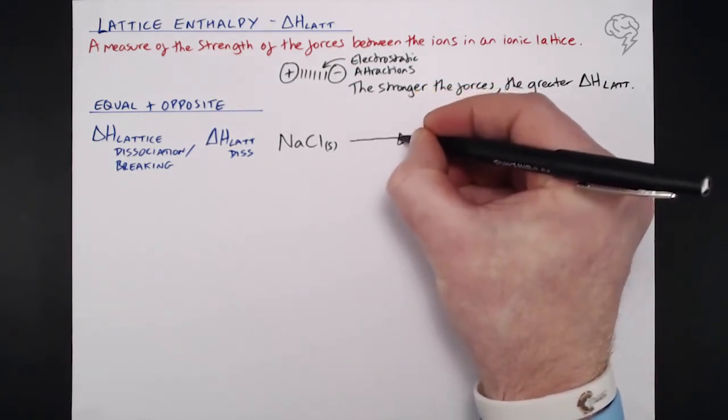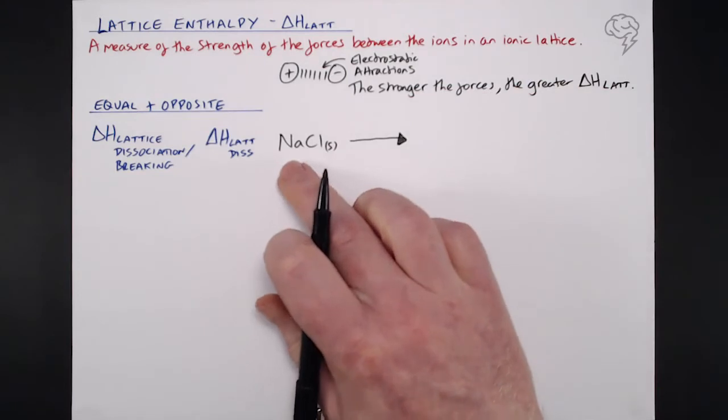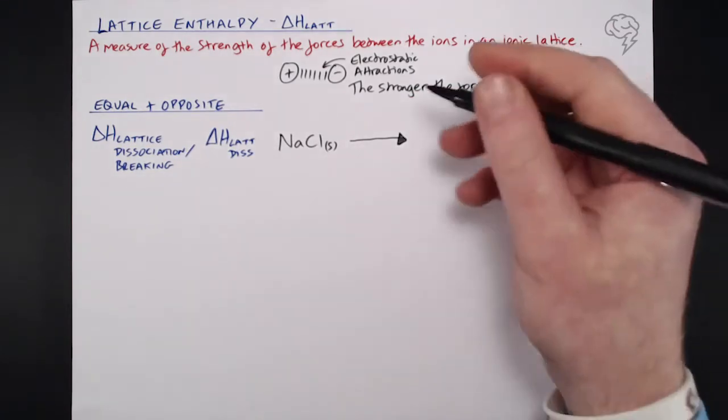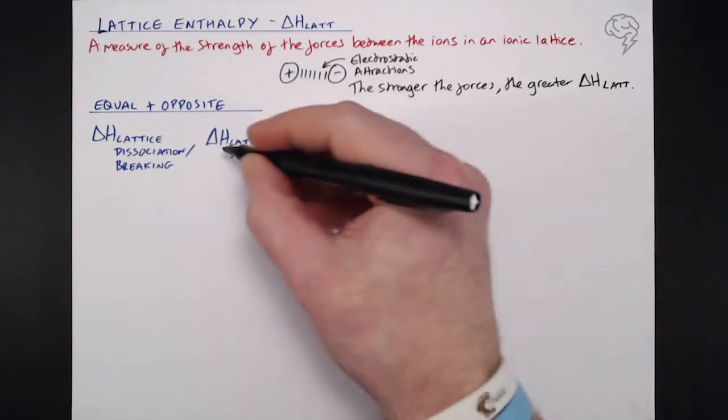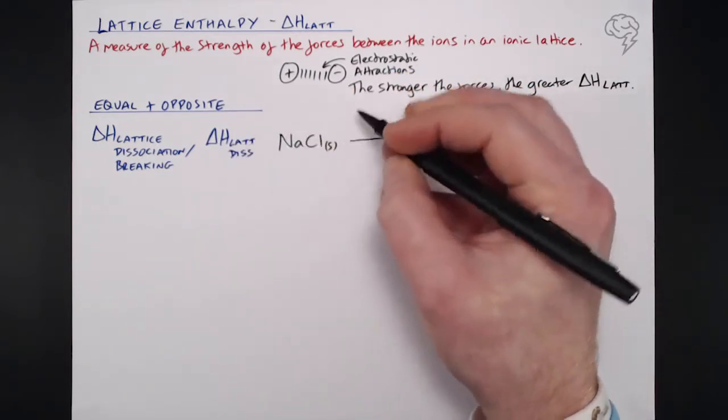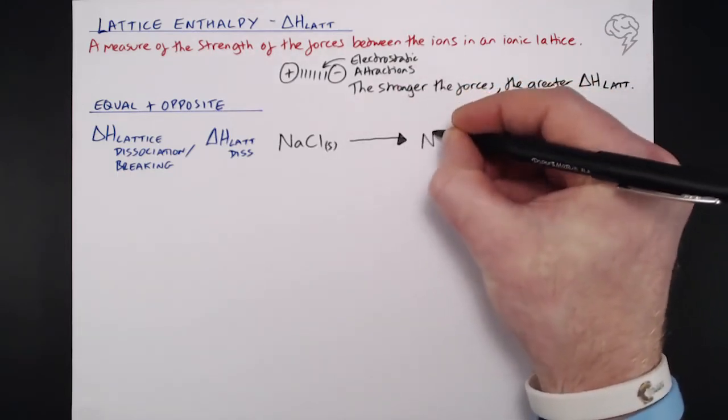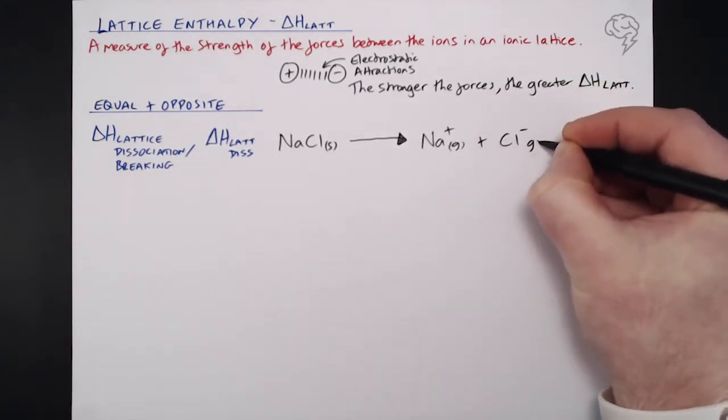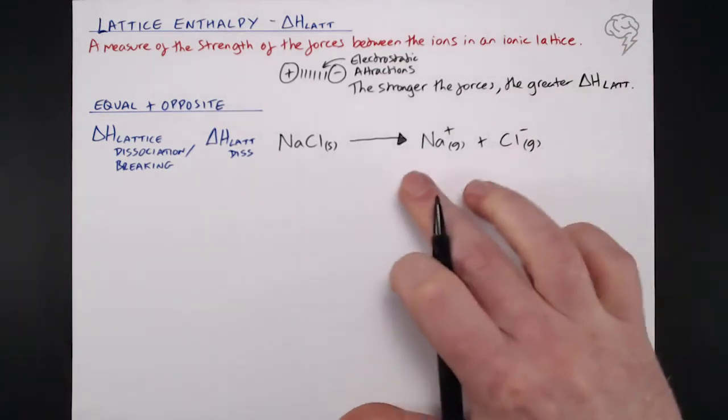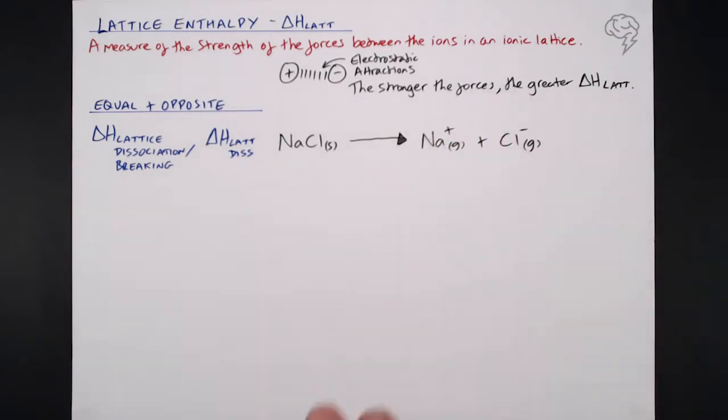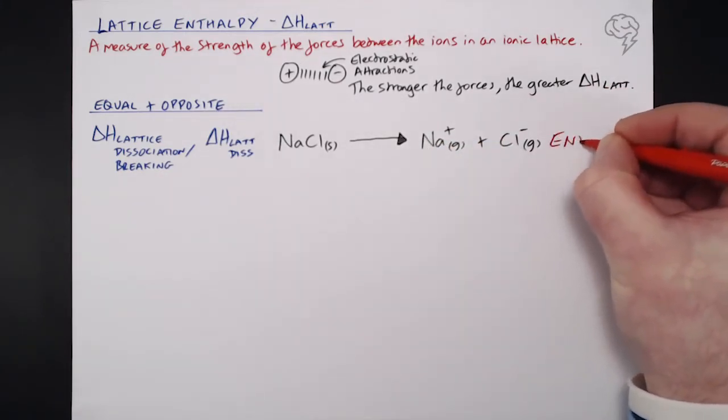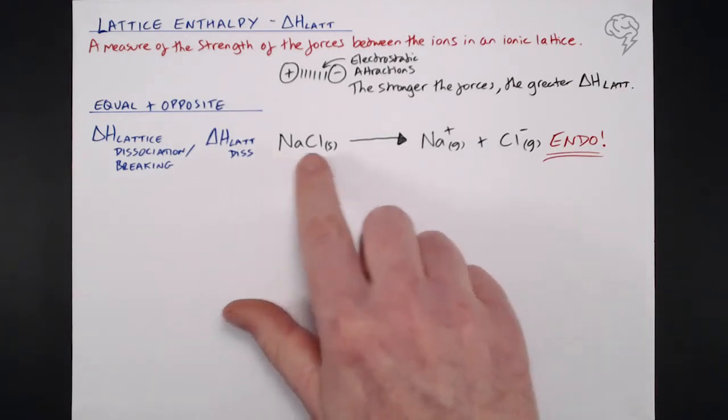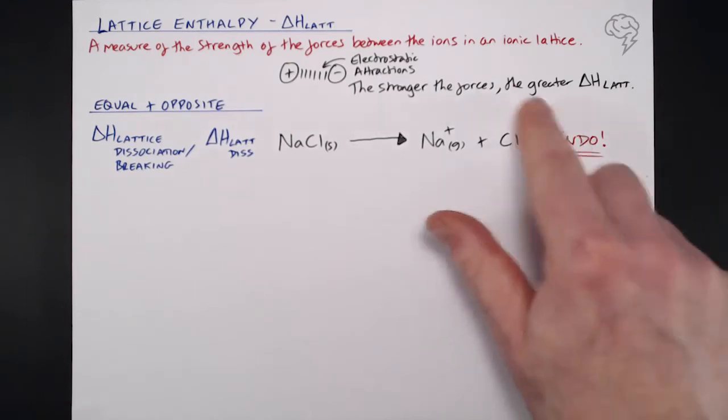So we've got our salt in its standard state. To break that lattice completely, we need to separate every single sodium ion and every single chloride ion. We essentially need to vaporize it completely. That word vaporize is really important because the lattice dissociation is defined as when you take your ionic substance in its standard state and produce gaseous ions. So we've got Na plus gas and Cl minus gas. We completely obliterate this salt into its separate ions in the gaseous state. Of course, this is a massively endothermic process. It's going to take a lot of energy to do that.